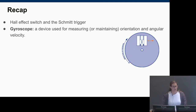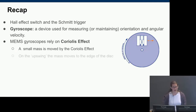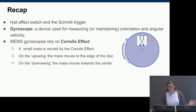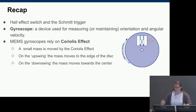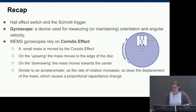Next we discussed gyroscopes, the last of the three devices that make up an IMU. A gyroscope is a device used for measuring or maintaining orientation or angular velocity. MEMS gyroscopes rely on the Coriolis effect — there's a small mass moved by a spring, and as the sensor moves, the mass inside moves. On the upswing the mass moves to the edge of the disk and on the downswing toward the center. As the rate of rotation increases, so does the displacement of the mass, causing a proportional change in capacitance.